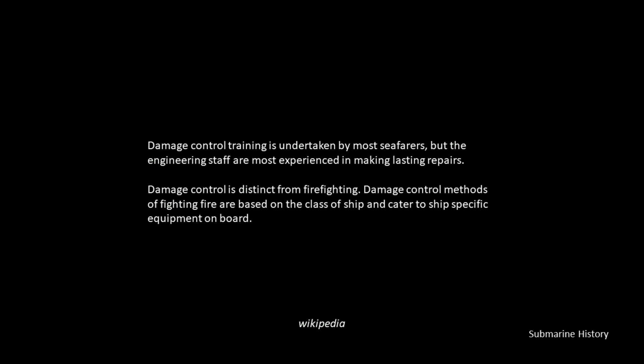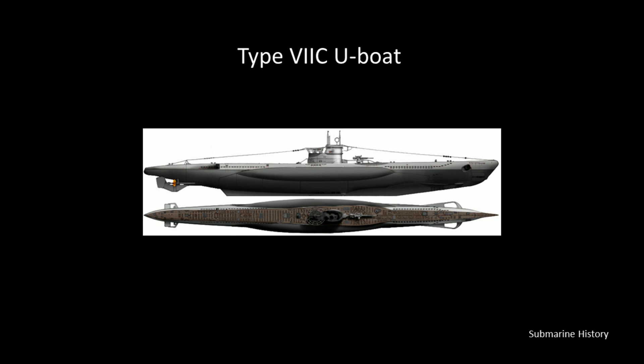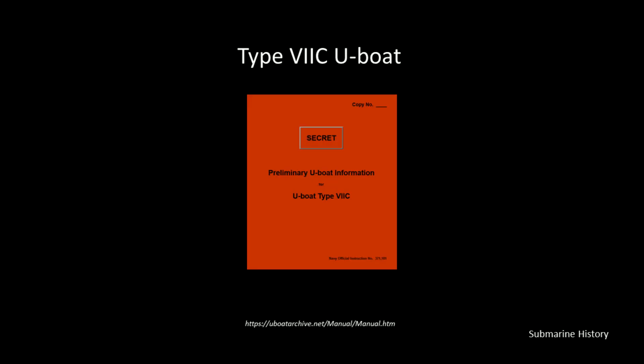Damage control training is undertaken by most seafarers, but the engineering staff are the most experienced in making lasting repairs. Damage control is distinct from firefighting — methods of fighting fire are based on the class of ship and cater to ship-specific equipment on board. For today, we're going to be talking about the Type 7C U-boat. Most of the briefing is based on this reference over at uboatarchive.net — a German technical document called Preliminary U-Boat Information, U-Boat Type 7C, which they had translated into English. It's kind of like an owner's manual for the Type 7.